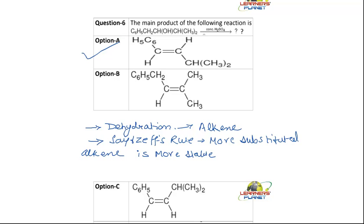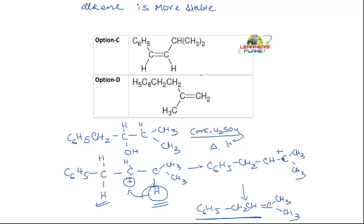So the compound formed has a C=C double bond: C₆H₅ connected to a C=C with CH₃ groups. Let me write it more clearly — C₆H₅-CH₂-CH=C(CH₃)₂. This is the compound which is formed, and this will be our answer.